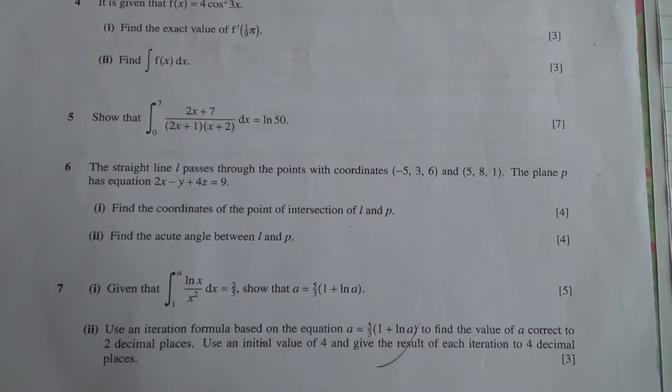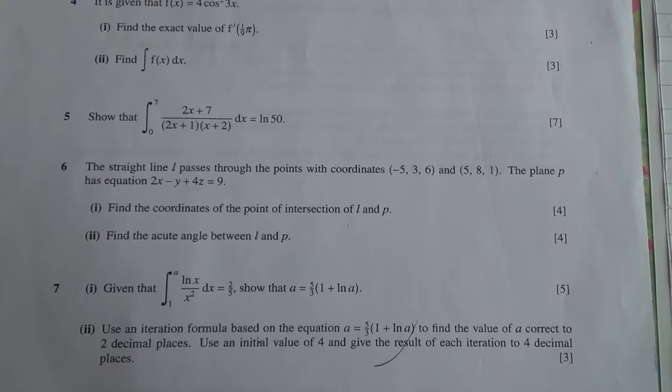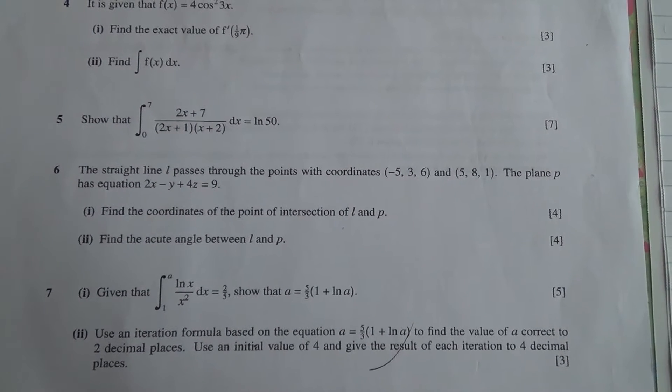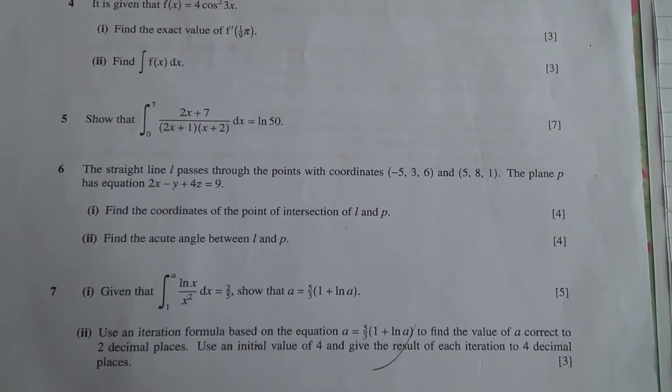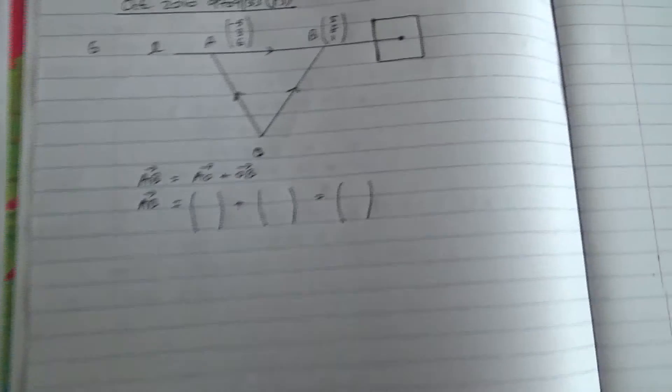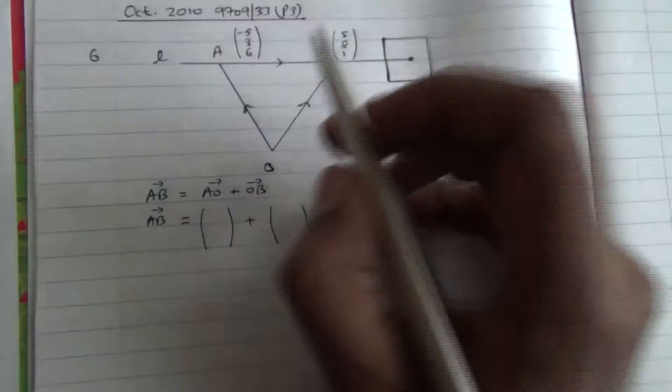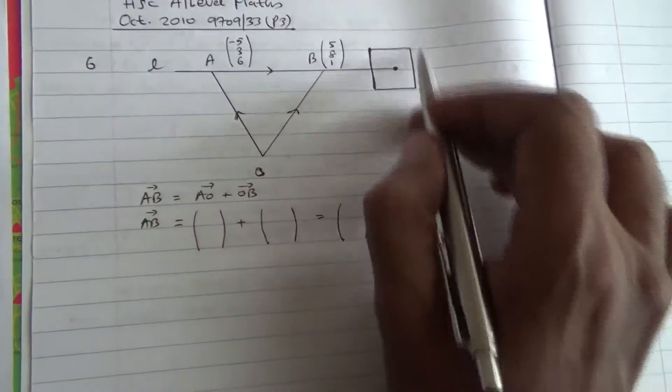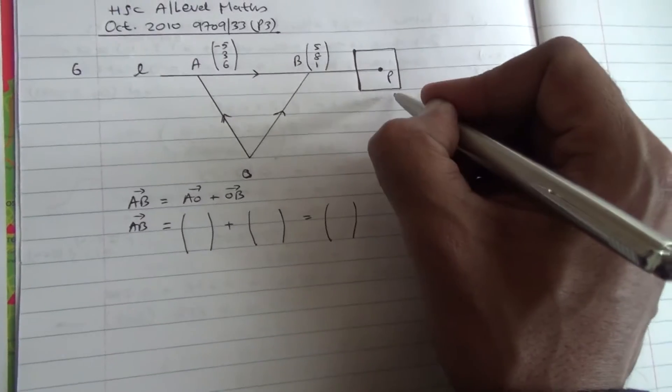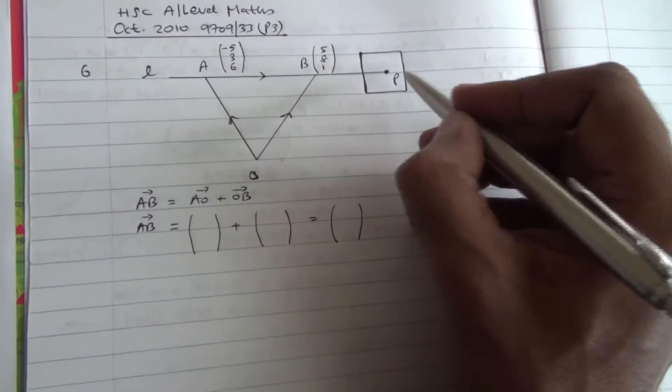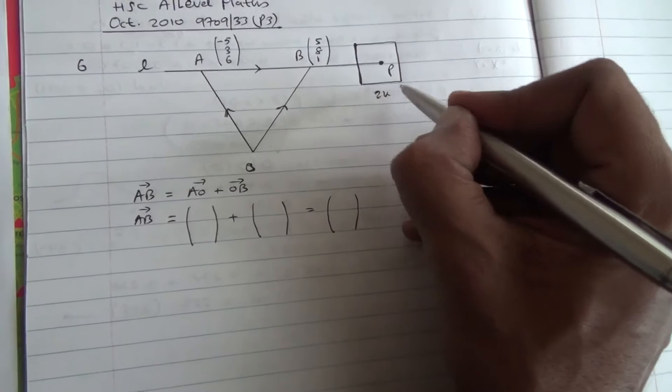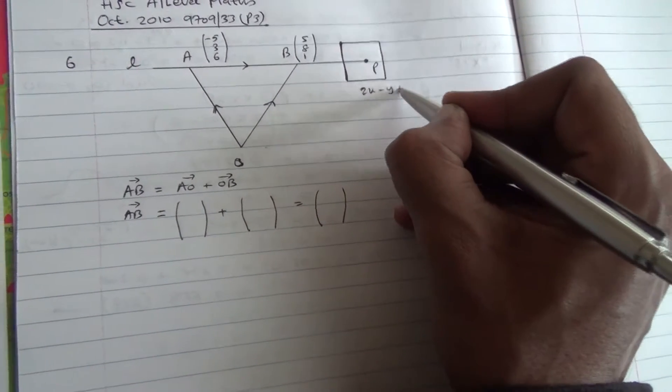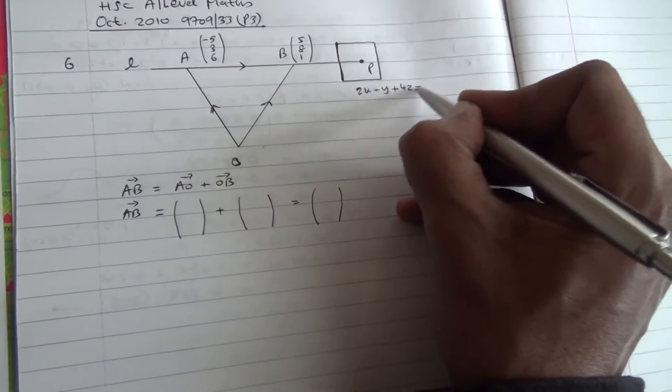For the first part, find the coordinates of the point of intersection of line L with P. Second part, find the acute angle between L and P. All right, vectors. So here we are. This is point A, point B, and that's the line L. It intersects the plane P, and the plane has the equation as given in the question, 2x - y + 4z = 9.